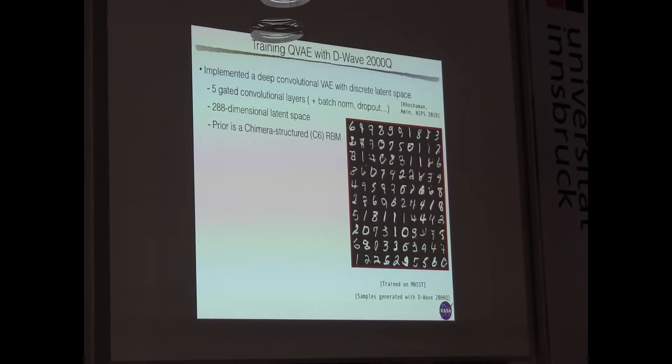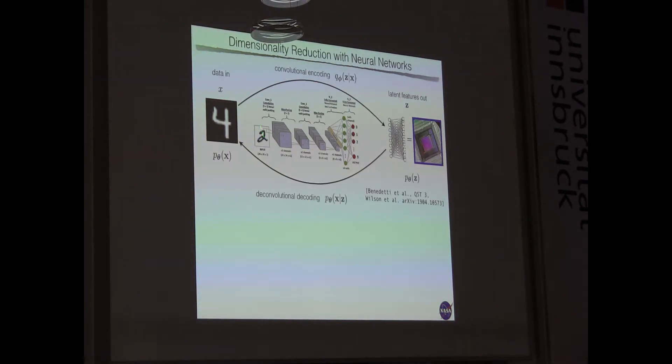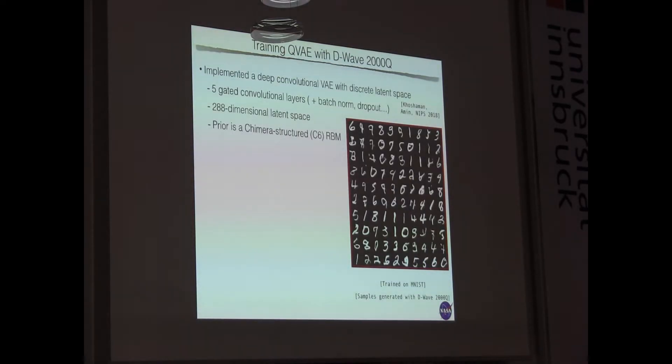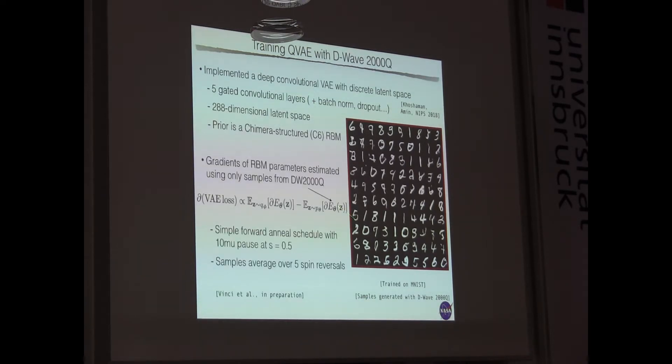So we implement these models. We use deep convolutional networks with several layers of convolutions. For example, here I show an example in which we train 288-dimensional latent space with a Chimera-structured RBM. And then we train our model end-to-end using only samples coming from a D-Wave 2000Q. And these are samples generated using the hardware. So the idea is that you sample and then you decode using the convolutions. And you are able to actually have a model that is correctly and well-trained on fairly large scale problem like MNIST.